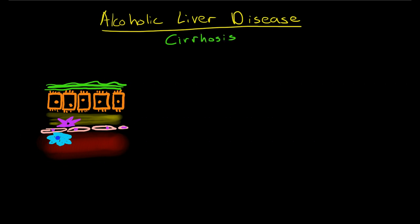But I also want to use alcoholic liver disease as a model to discuss the pathophysiology of cirrhosis. And cirrhosis, in this country, alcoholic liver disease is one of the most common causes of cirrhosis.